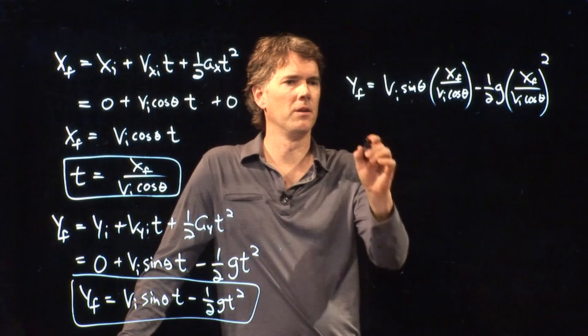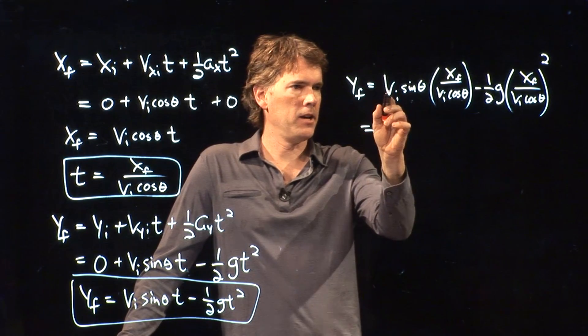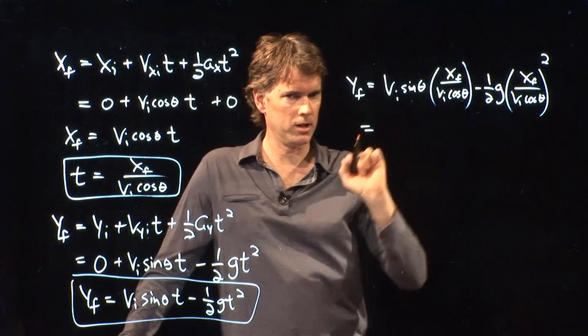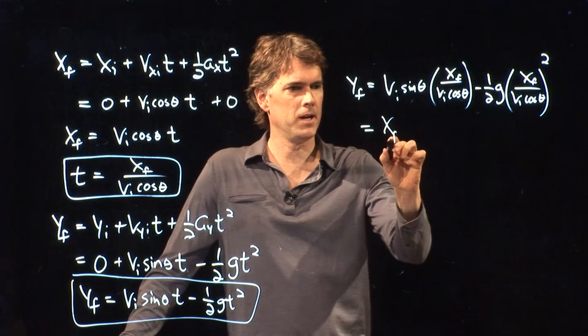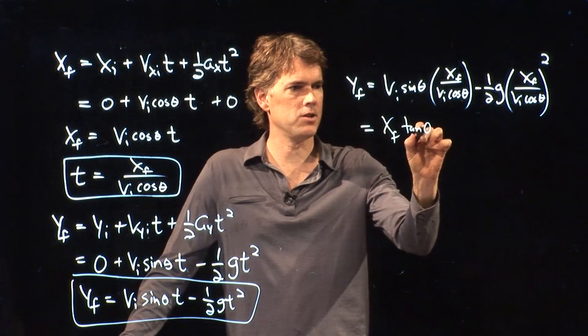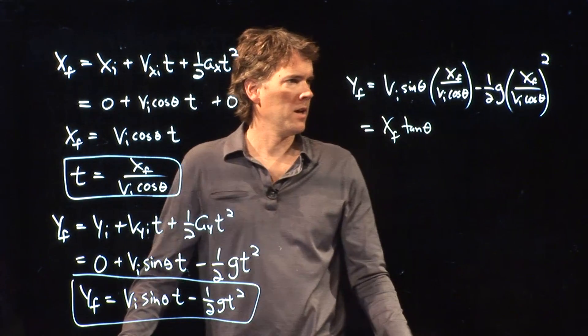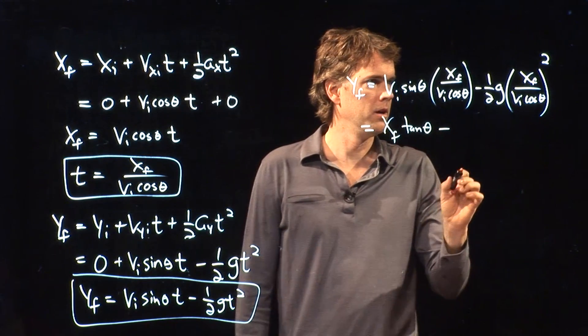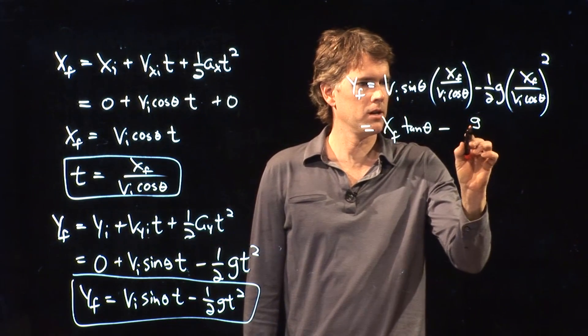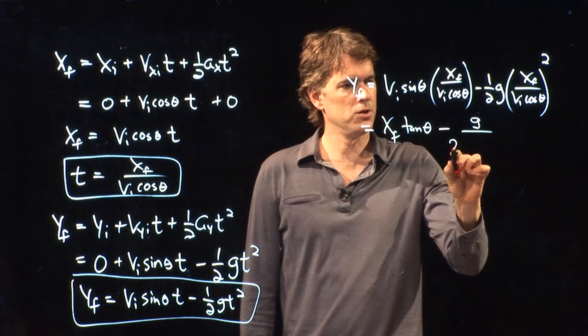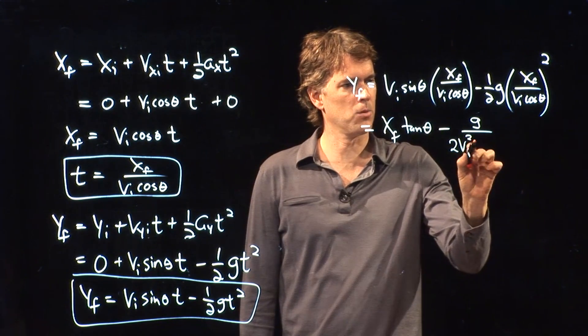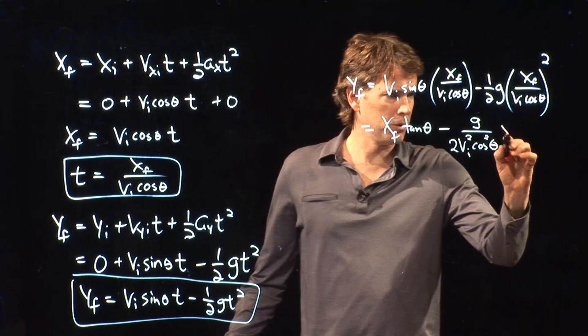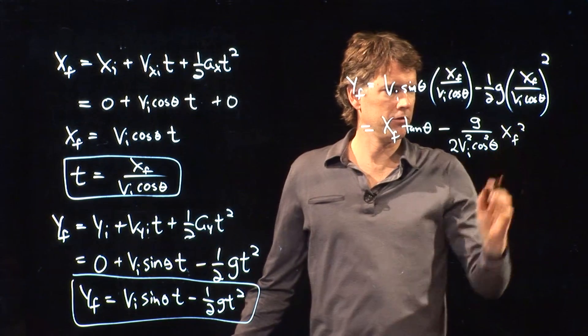And now we can simplify this a little bit. The vi here cancels with the vi there. The sine theta over cosine theta becomes tangent theta. And we get xf tangent theta. And this guy over here, let's just multiply it out a little bit. We've got a g up top. We have a 2 vi squared cosine squared theta. And then all of that is multiplying xf squared.